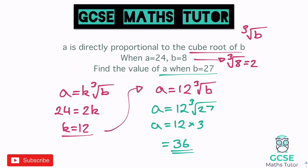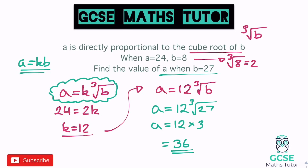The process is very similar in all these questions: substitute the given values into the formula a equals kb, solve for k, rewrite the formula with that k value, then substitute the new value to find the remaining unknown. Just amend the b term to b squared, root b, cube root b, or whatever is needed.